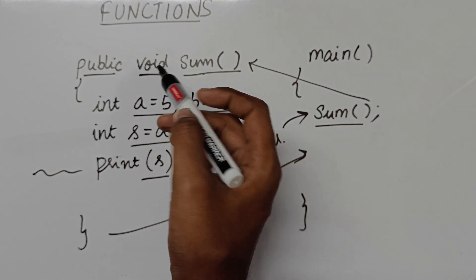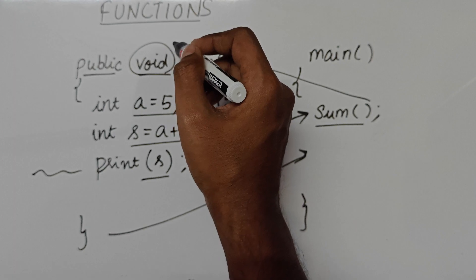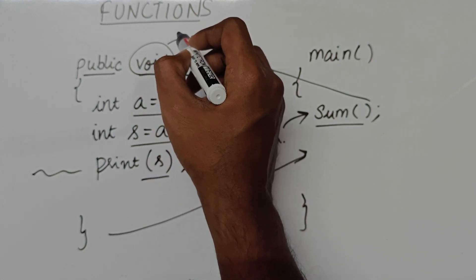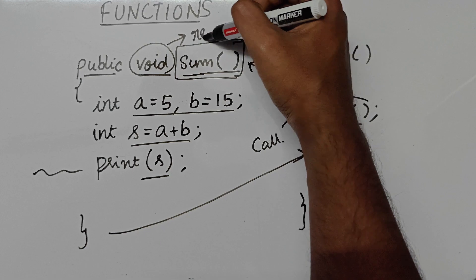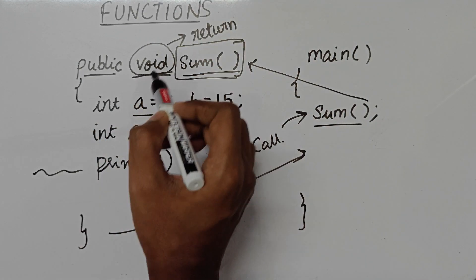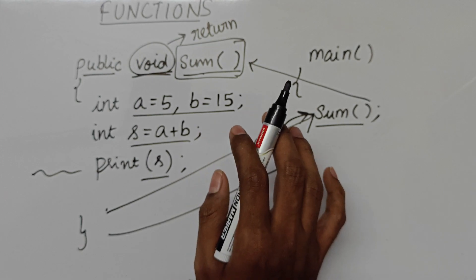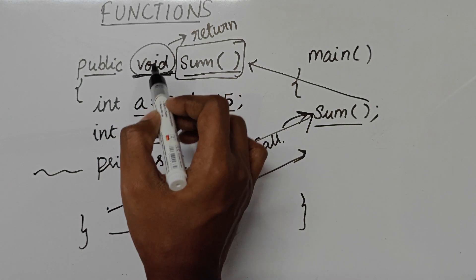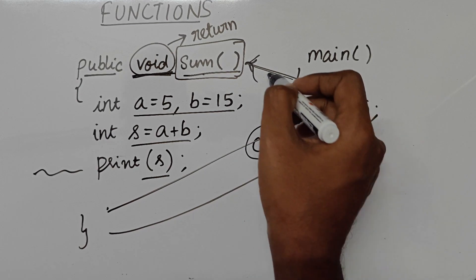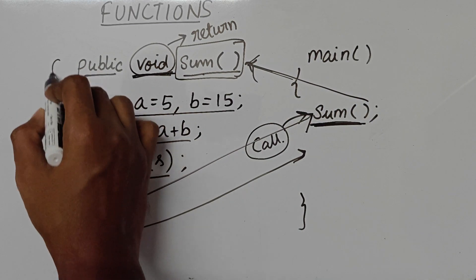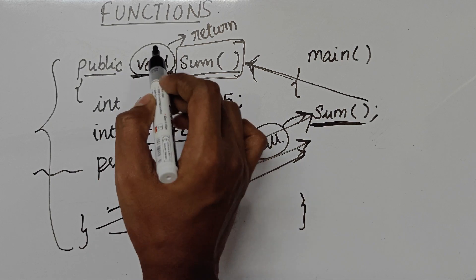So this is how a function works. Now there are some more things to look at, like `void`. So `void` basically tells what this function is going to return. Here I have mentioned `void`, so this function is not going to return anything back to the function call. When the function call is made, the control goes to the function, the entire function runs, and after that it is not going to give anything back in return — that is what `void` means.